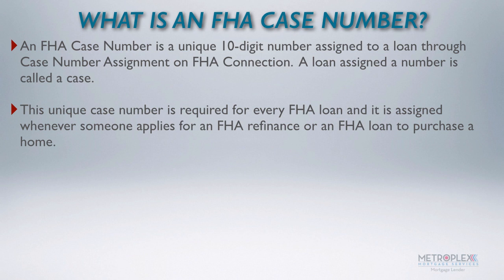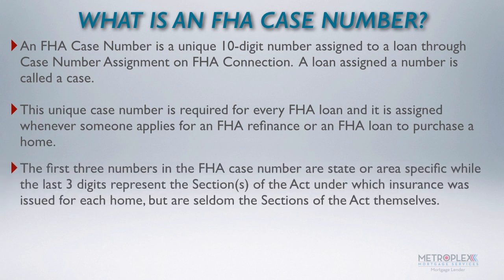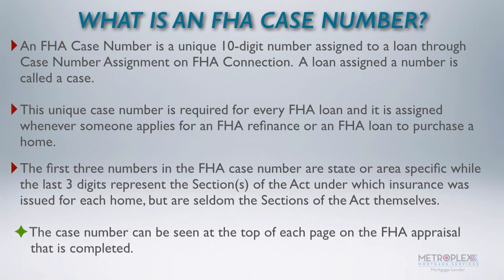The first three numbers in the FHA case number are state or area specific, while the last three digits represent the sections of the Act under which insurance was issued for each home, but are seldom the sections of the Act themselves.